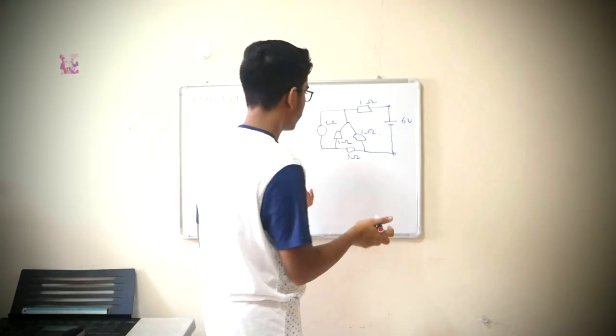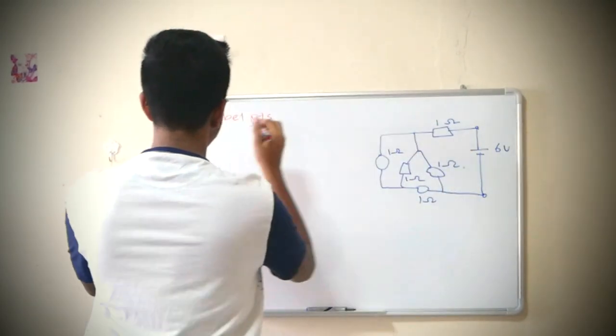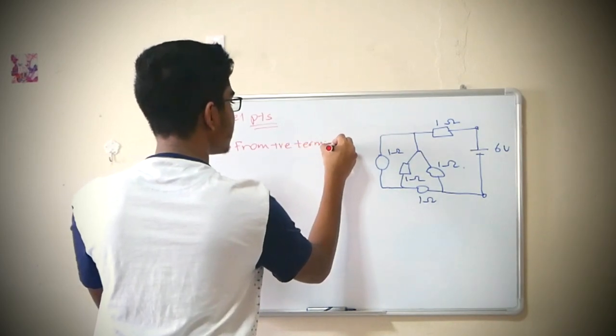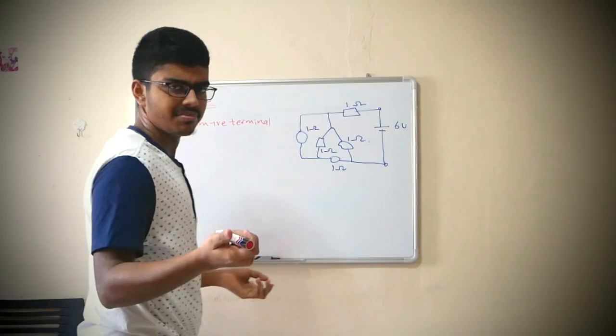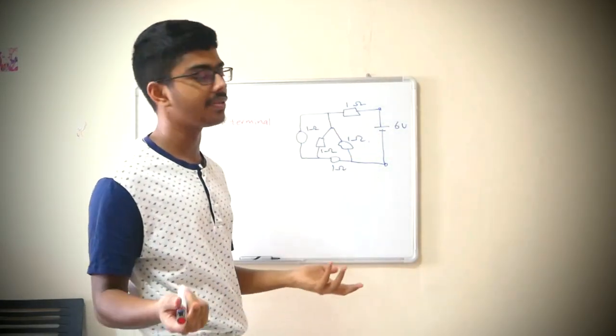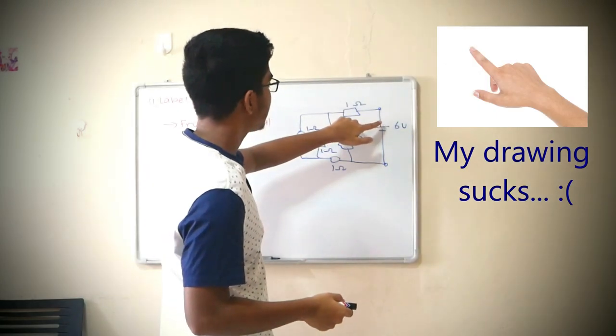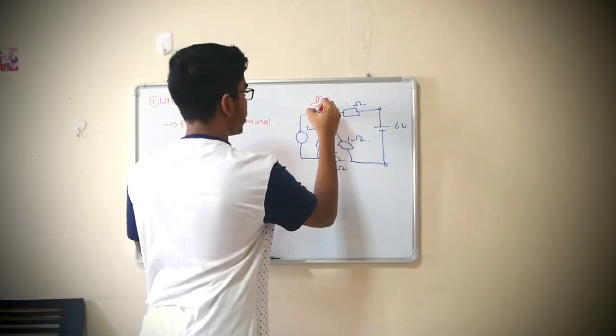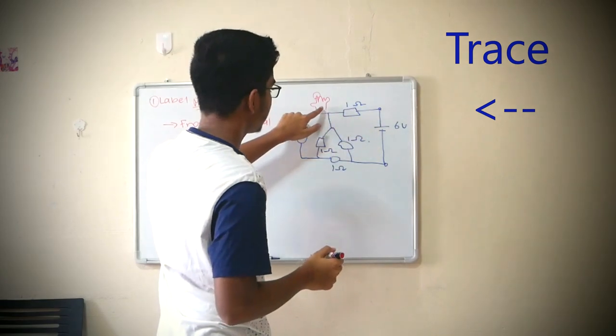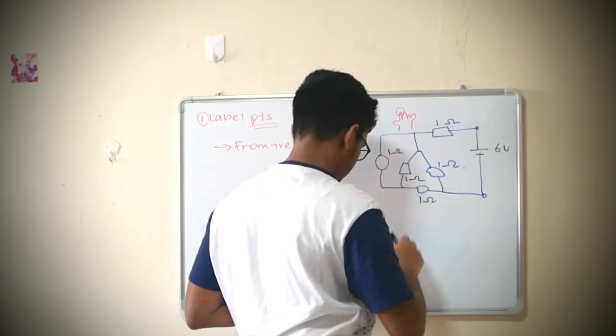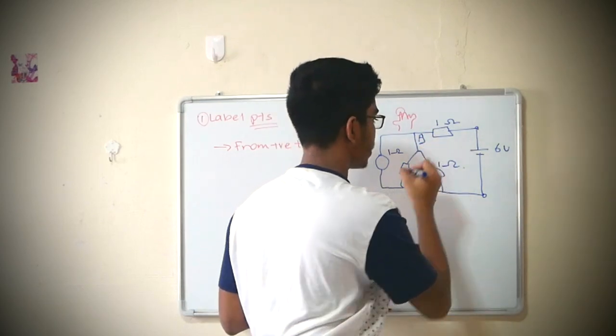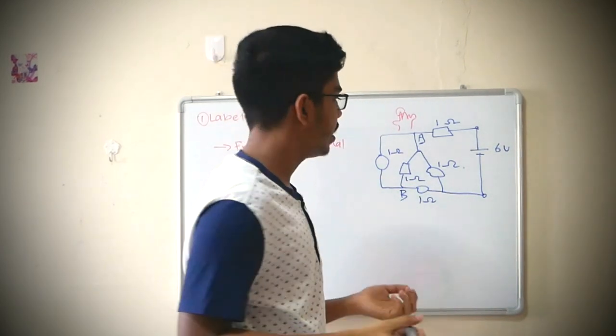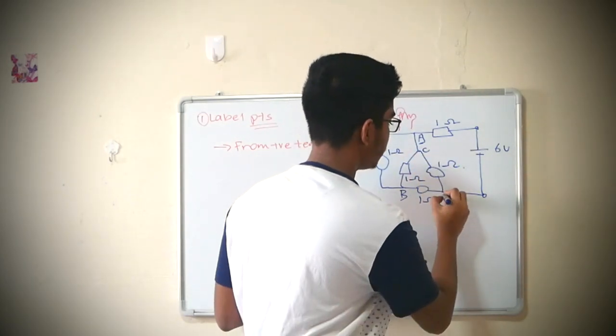So what do I mean by labeling points? Basically, you label those intersections and where the wires meet as points, okay? So we label from the positive terminal. Why is it from the positive terminal? Because current flows conventionally from the positive to the negative terminal. Just take a finger and we trace. Take a finger and we trace and be like, okay, this is one point to label this as A.